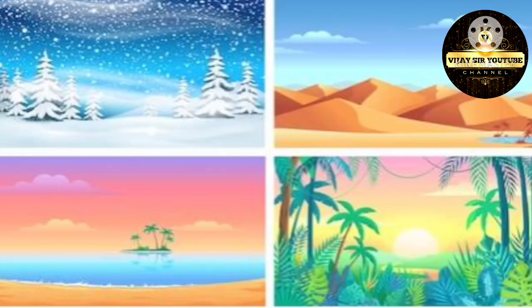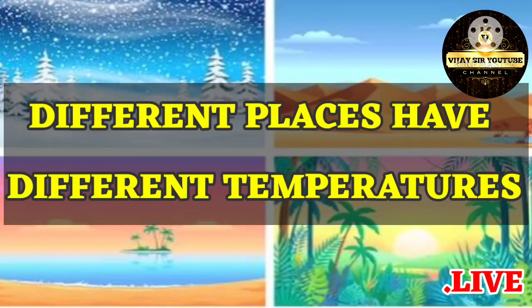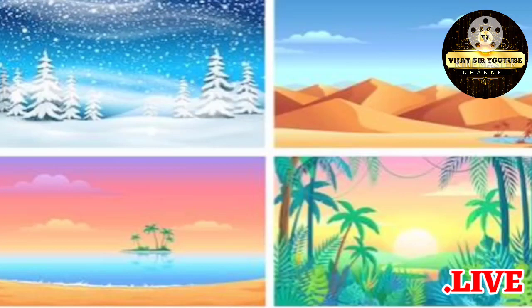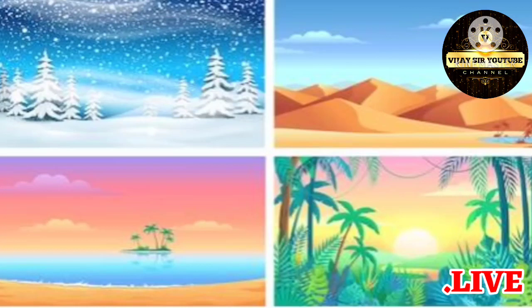Today's concept is: different places have different temperatures. In the introduction class, we learned many things about temperatures. Temperature varies from one place to another place. Different places have different temperatures — why do these different temperatures happen? There are many reasons. Now we will take a look at some of the possible reasons.